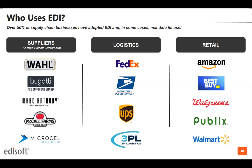The suppliers to these big box retailers are likely some of you listening right now. On the left-hand side are sample Edisoft customers across many vertical industries that have used EDI to automate their order-to-cash cycle with those retailers. Wall is a consumer packaged goods or electronics company, Bugatti is an apparel company, Mark Anthony is a cosmetics company, McCall Farms is food and beverage, and Microcell is electronics. Edisoft has worked with suppliers across many vertical industries and captures any vertical-specific information — such as lot, serial, or expiry data — required by your trading partner.